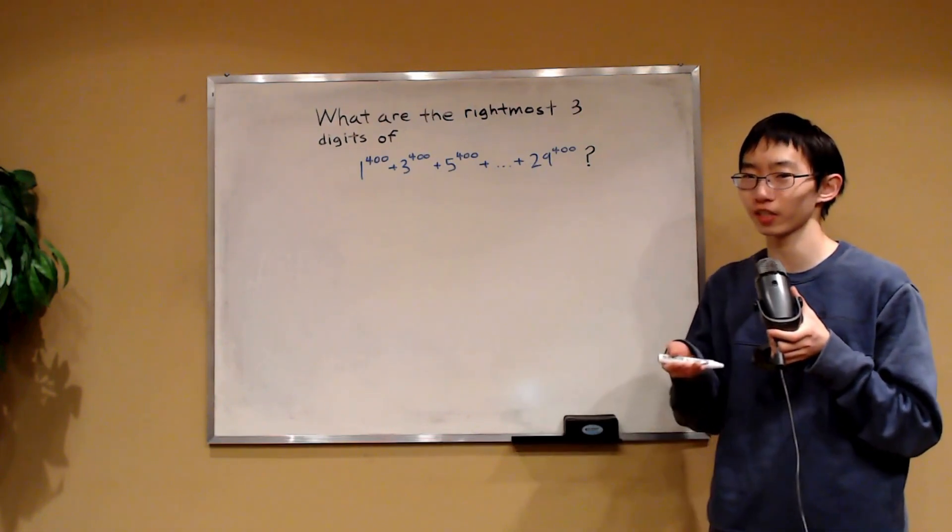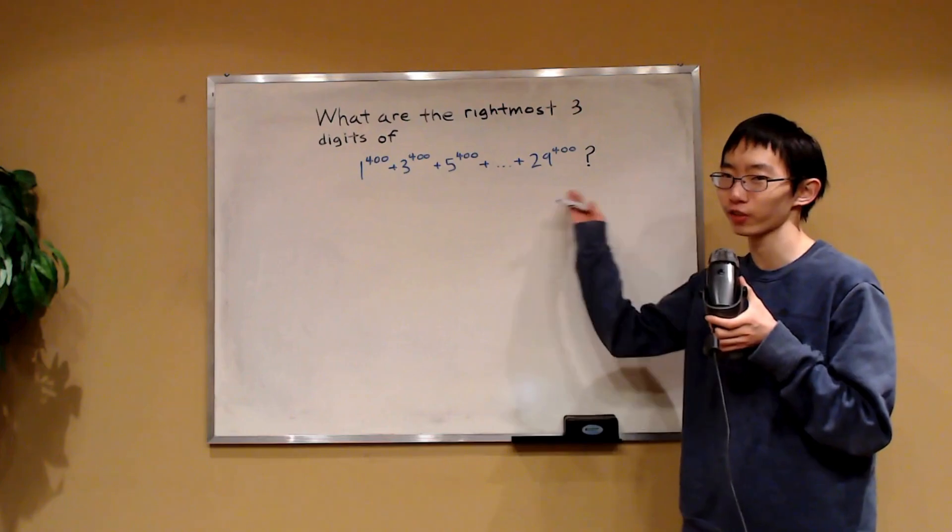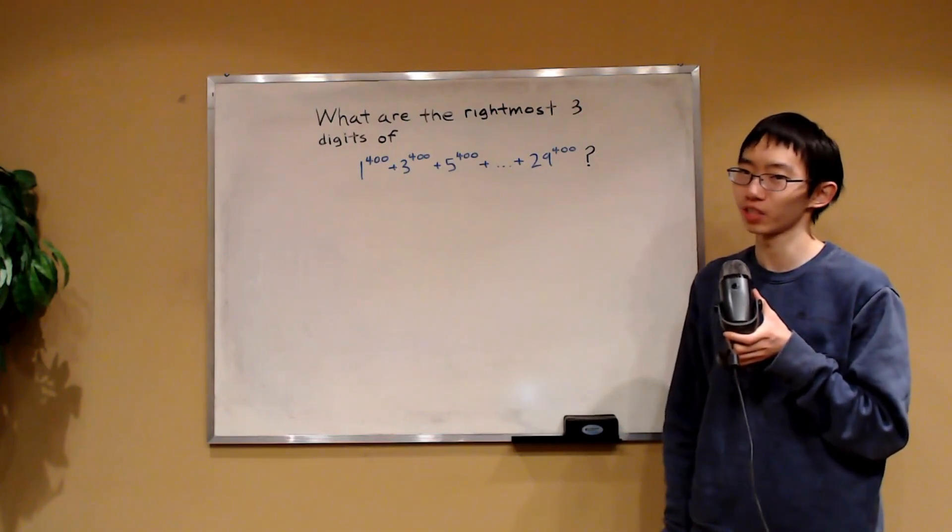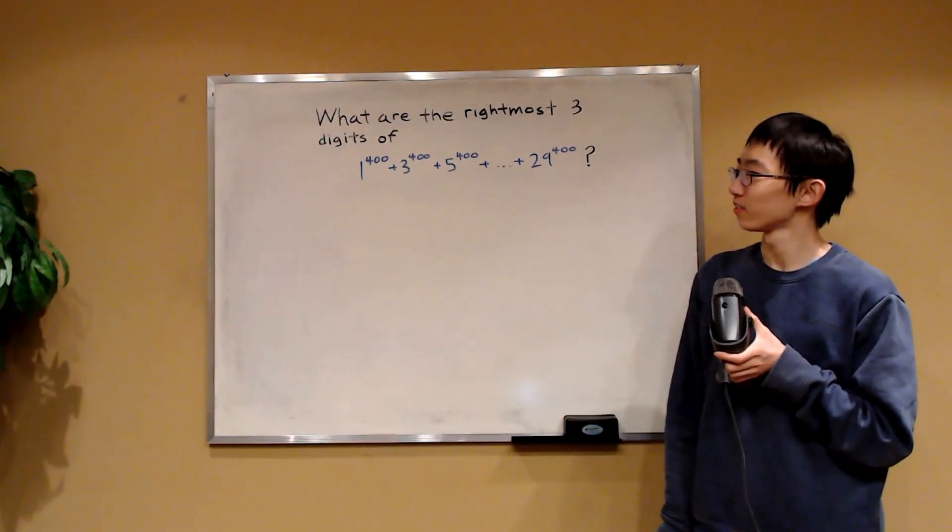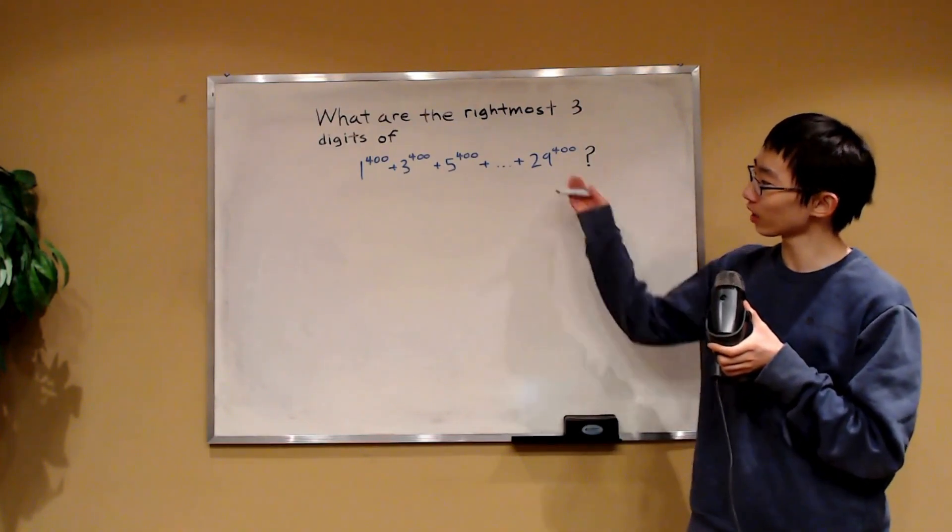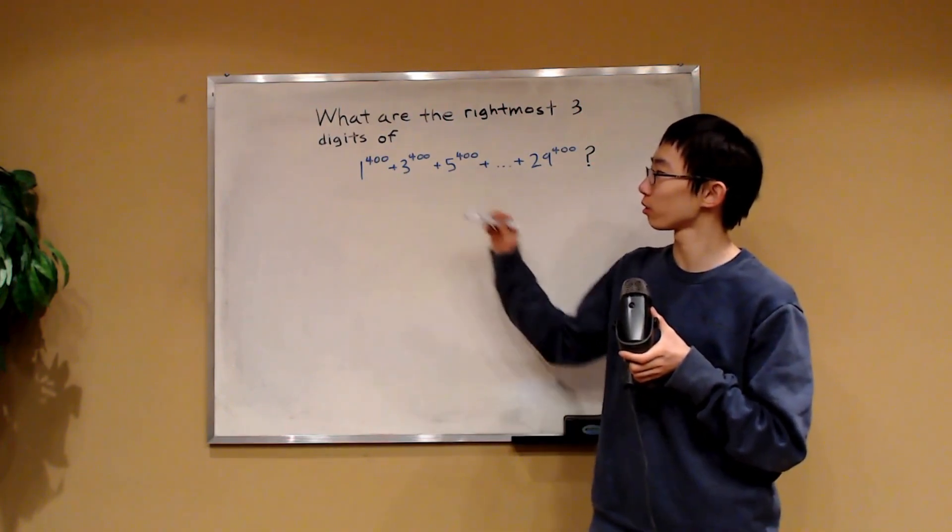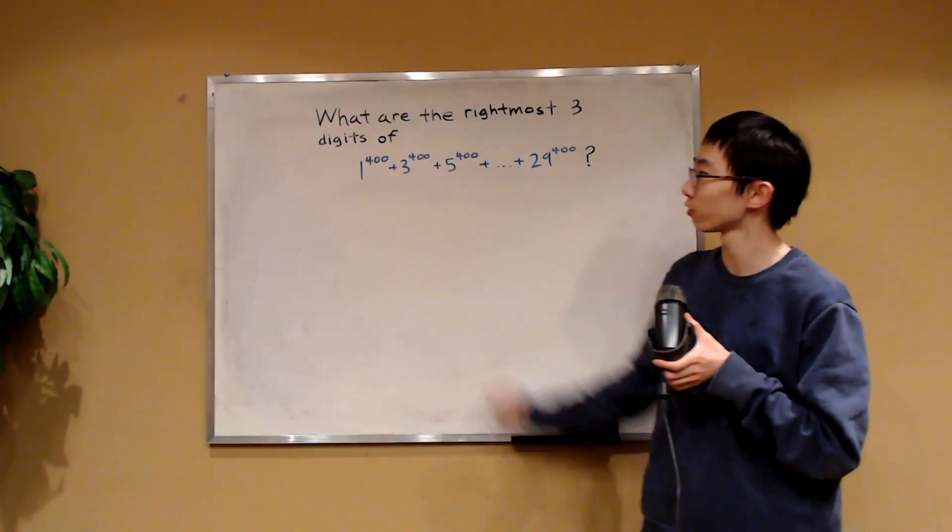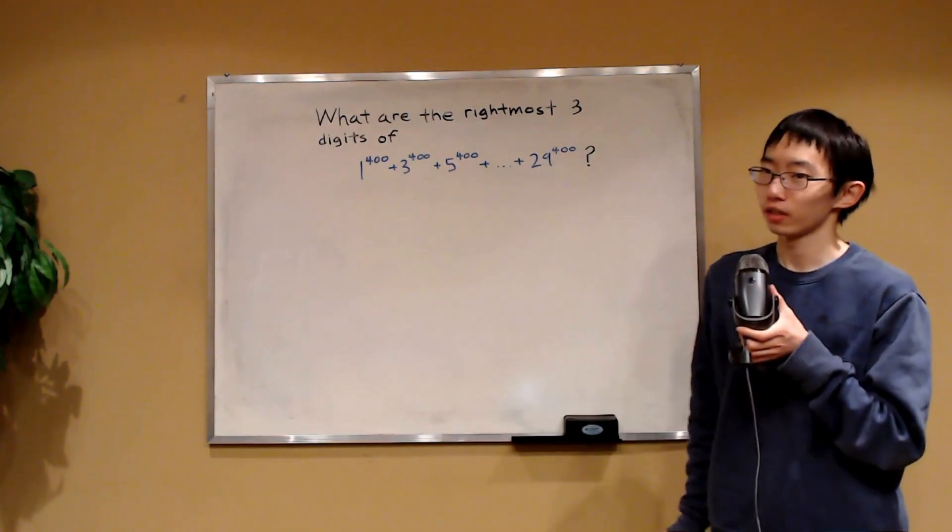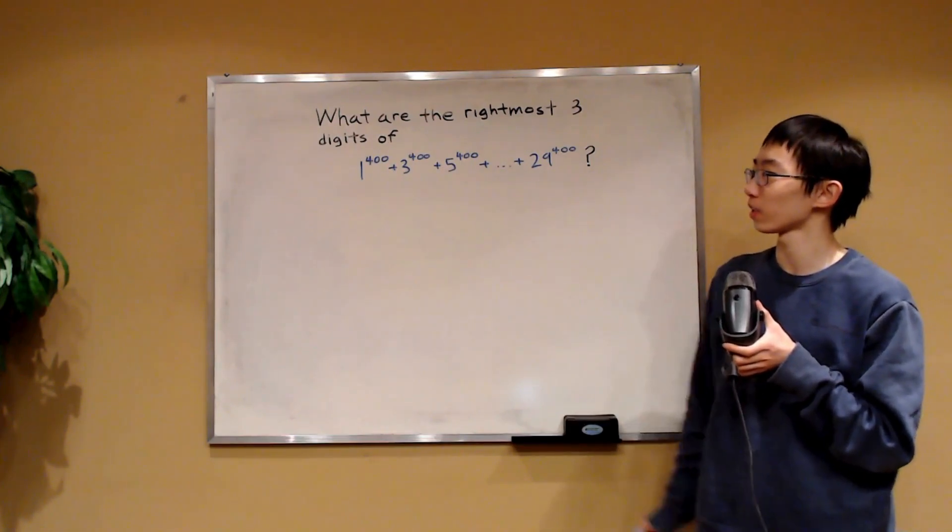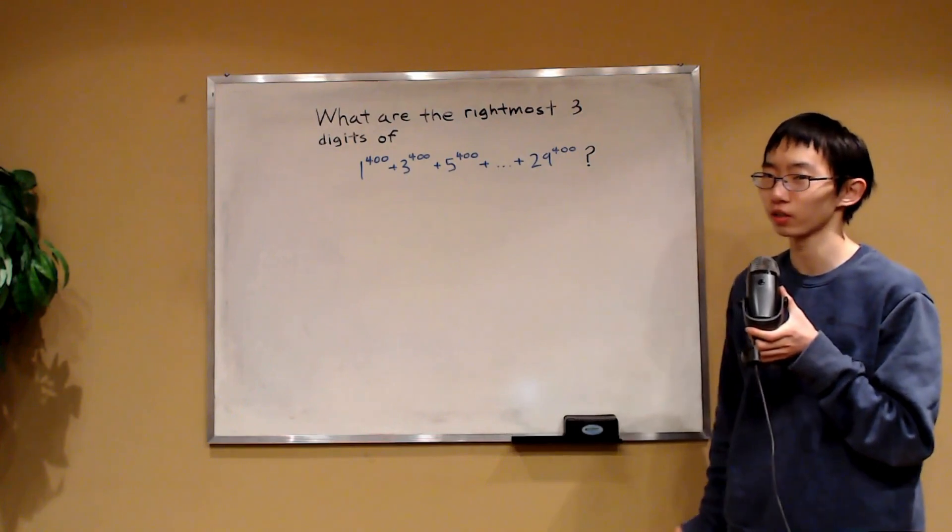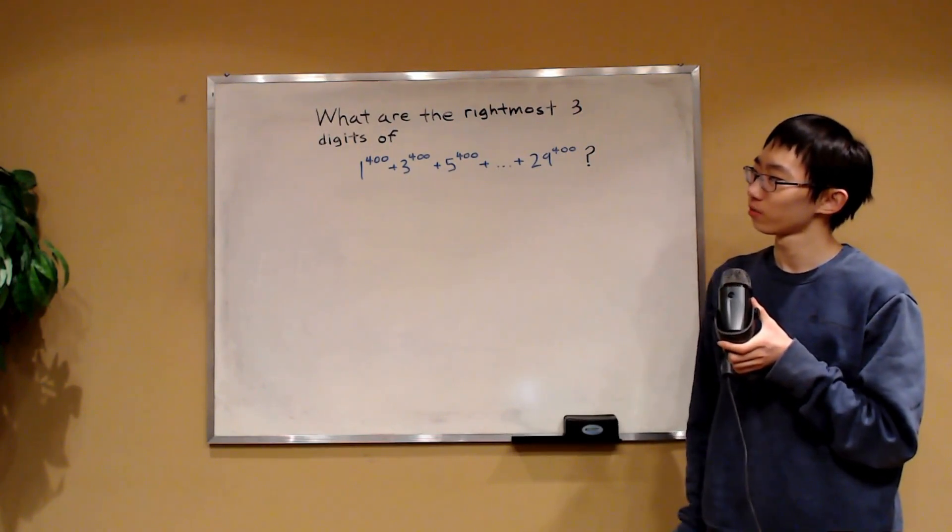I invite you guys to pause the video and try it for yourself. Done? Okay, let's go on. Firstly, it's the sum of the odd numbers from 1 to 29 raised to the 400 power. But that doesn't really make it any easier. Is there any way we can analyze each individual number a little bit better?